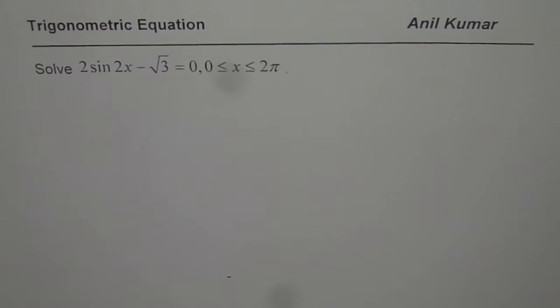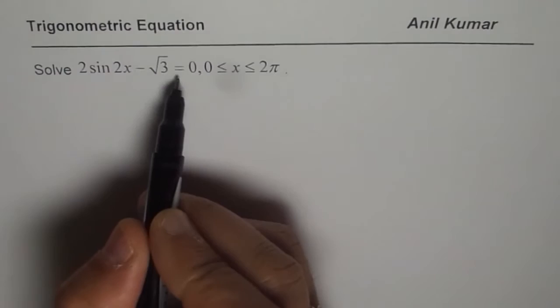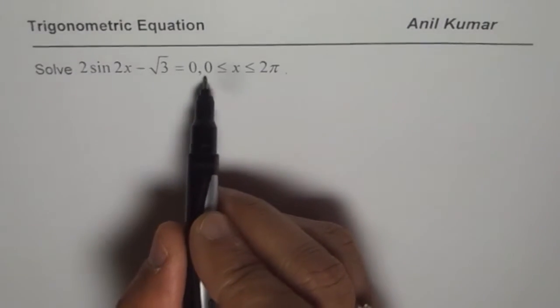Trigonometric equation. I am Anil Kumar and here is a very important trigonometric equation which we are going to solve. Most important is the concept we are going to deal with while solving this equation. It is 2 sin 2x minus square root 3 equals 0, and the domain is from 0 to 2π.